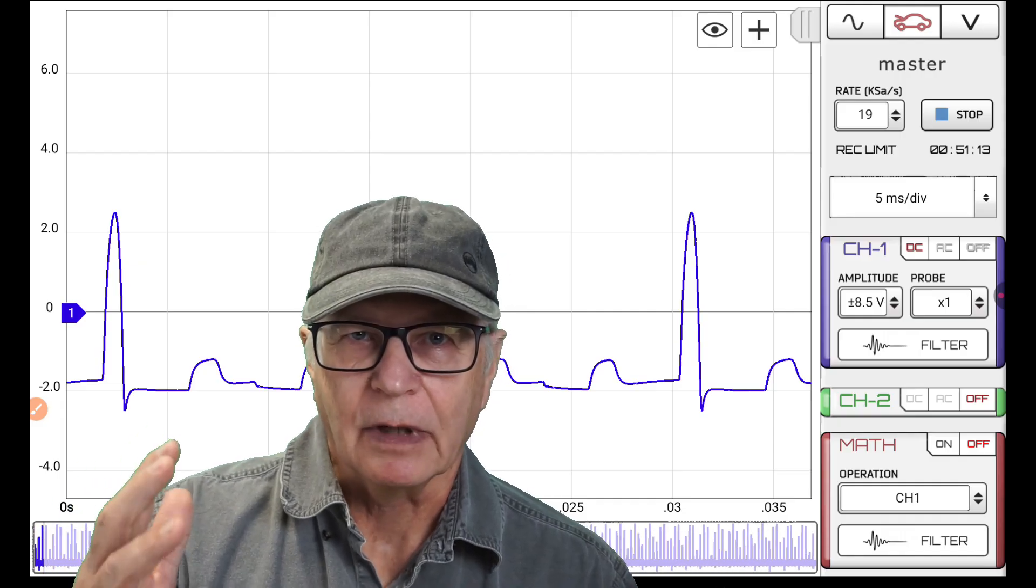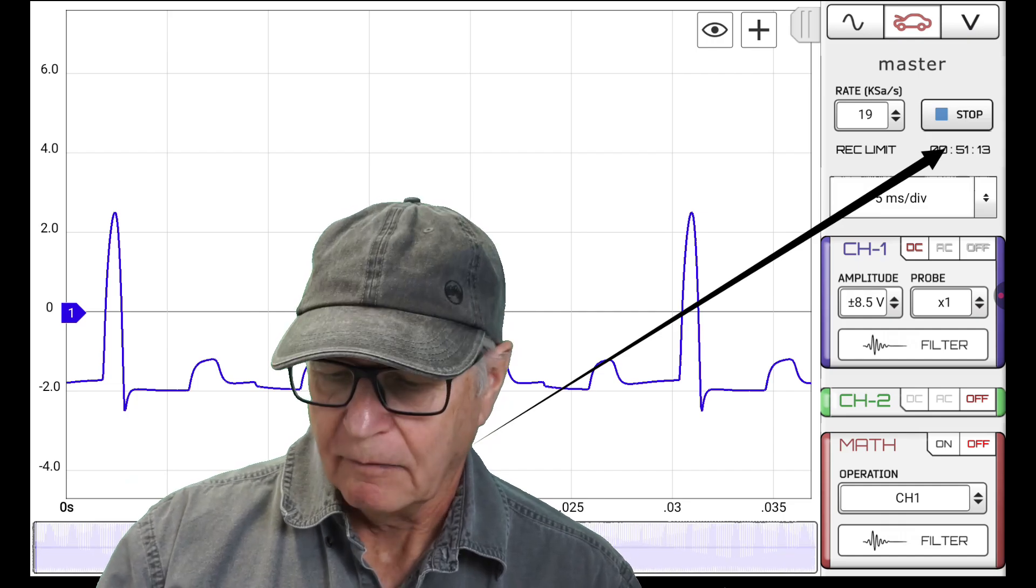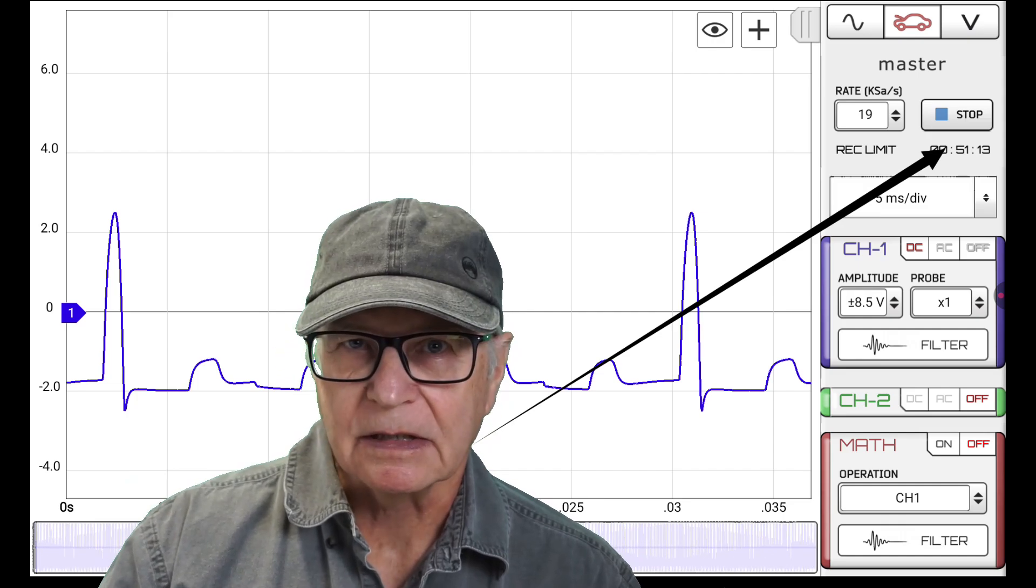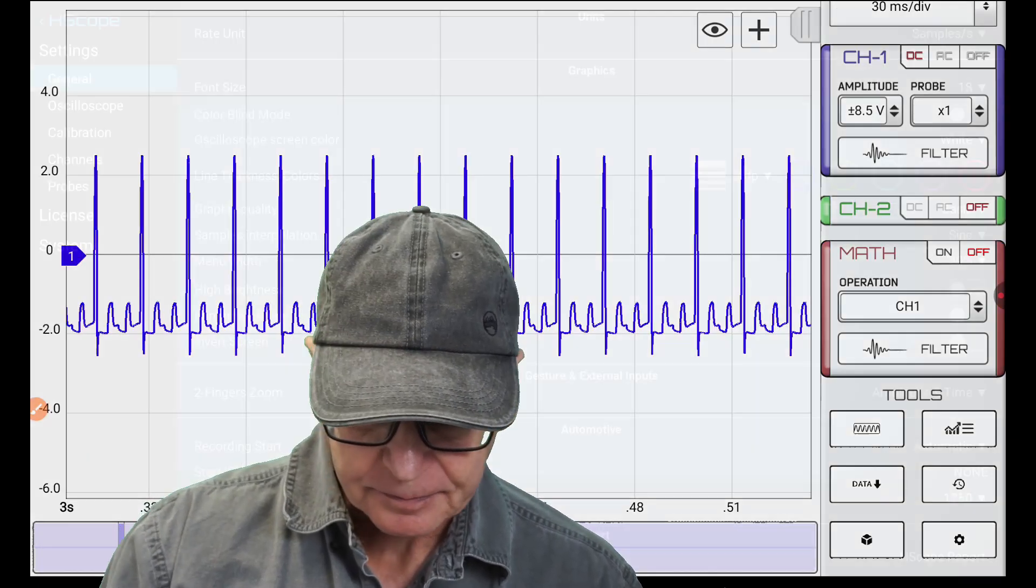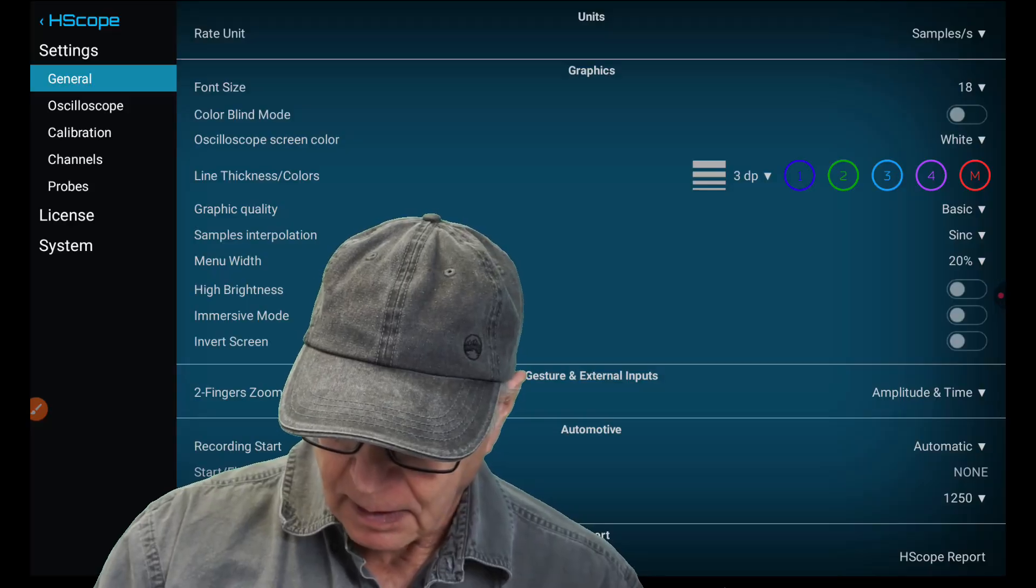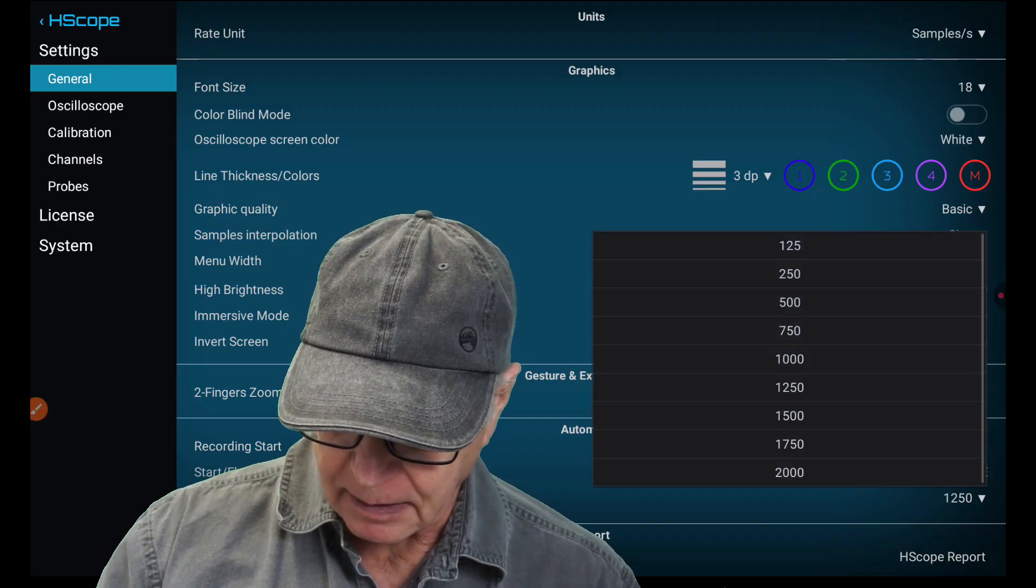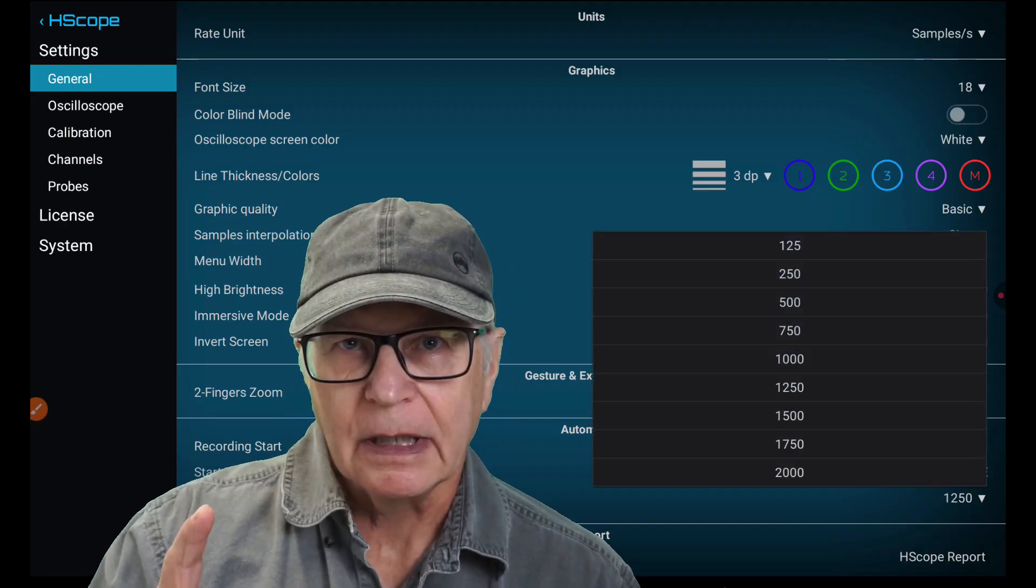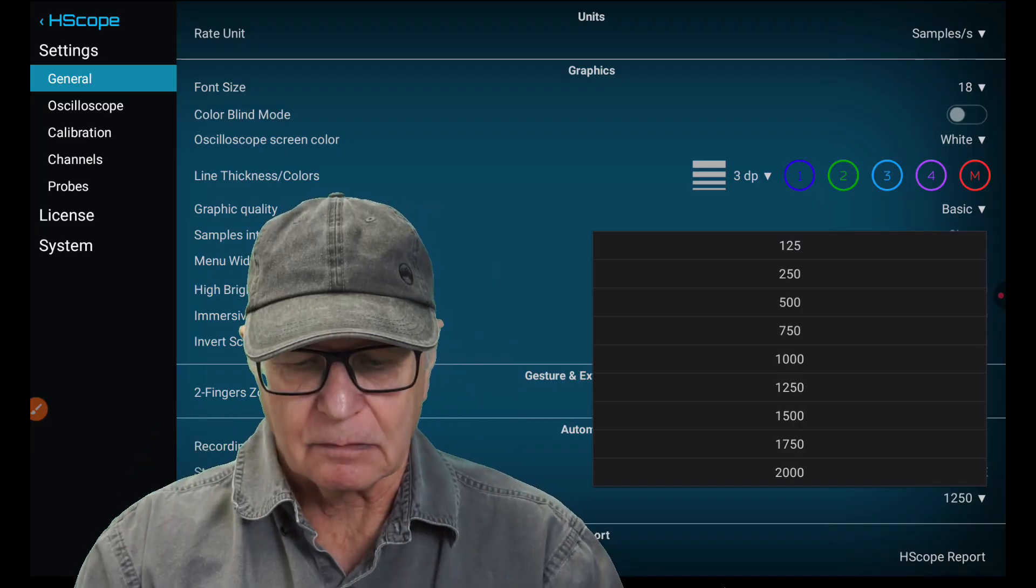It's streaming right now. Now, have a look at this very long buffer time, 51 minutes at this setting. Let's go in settings. Right here, memory allocated, right at the bottom. We can select how much memory of the device, the Android device, the phone or tablet, how much memory we dedicate to this automotive mode.